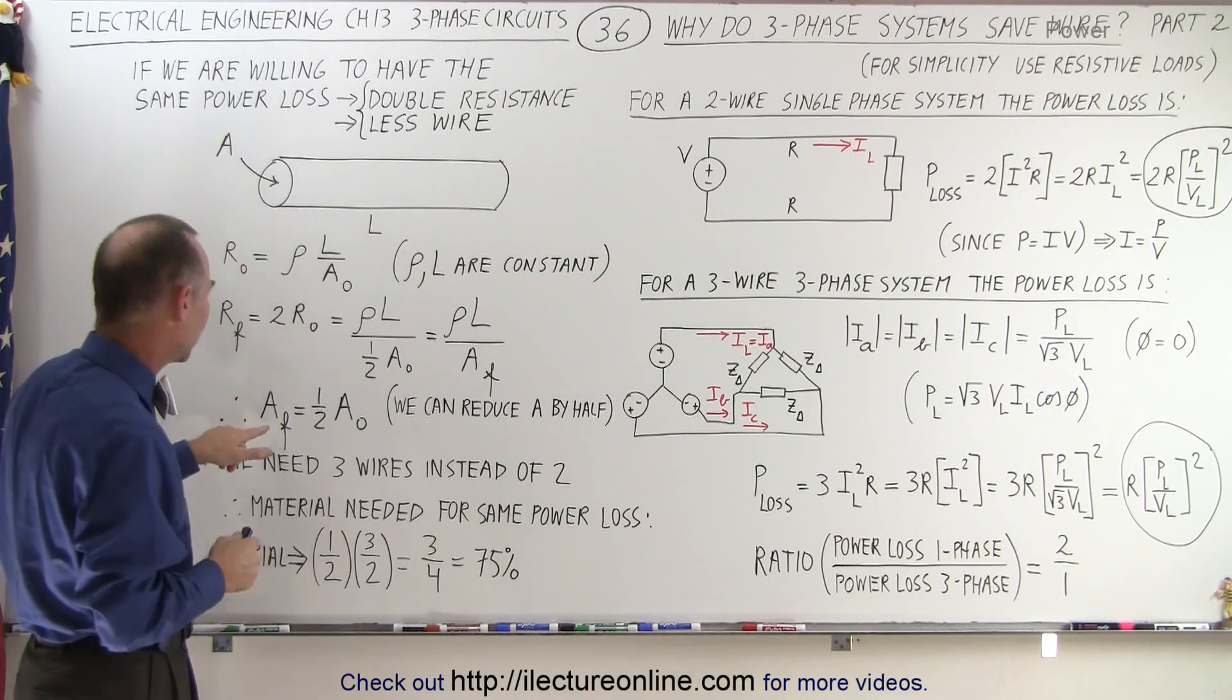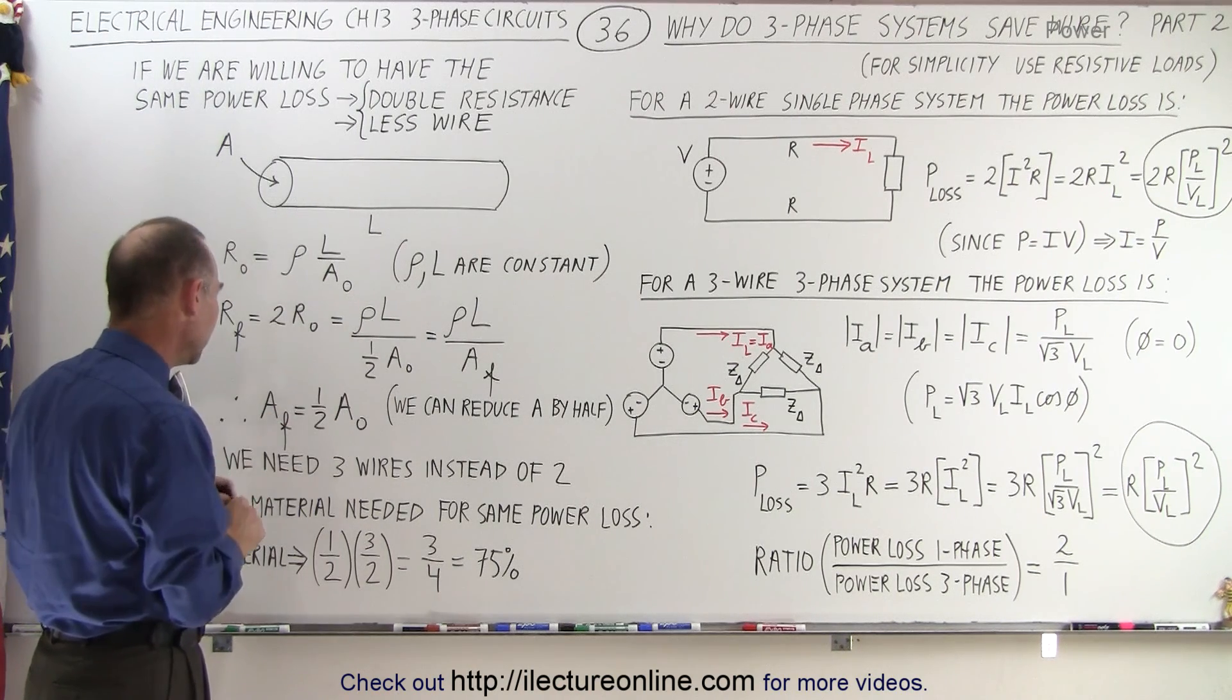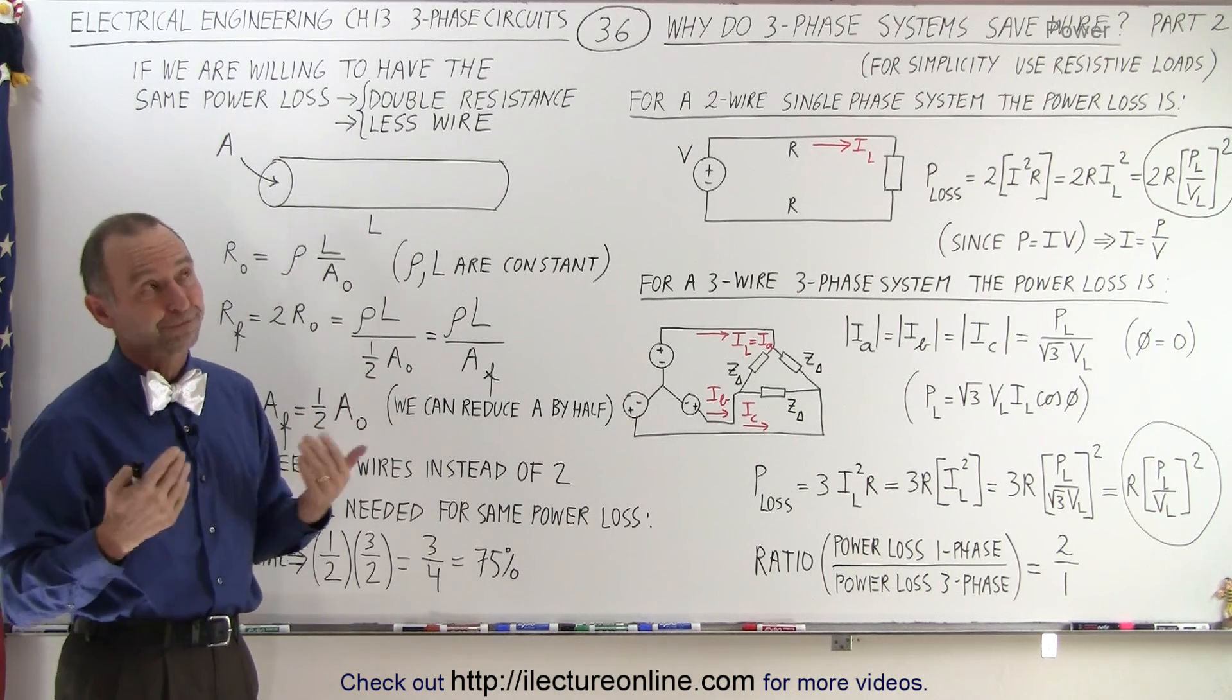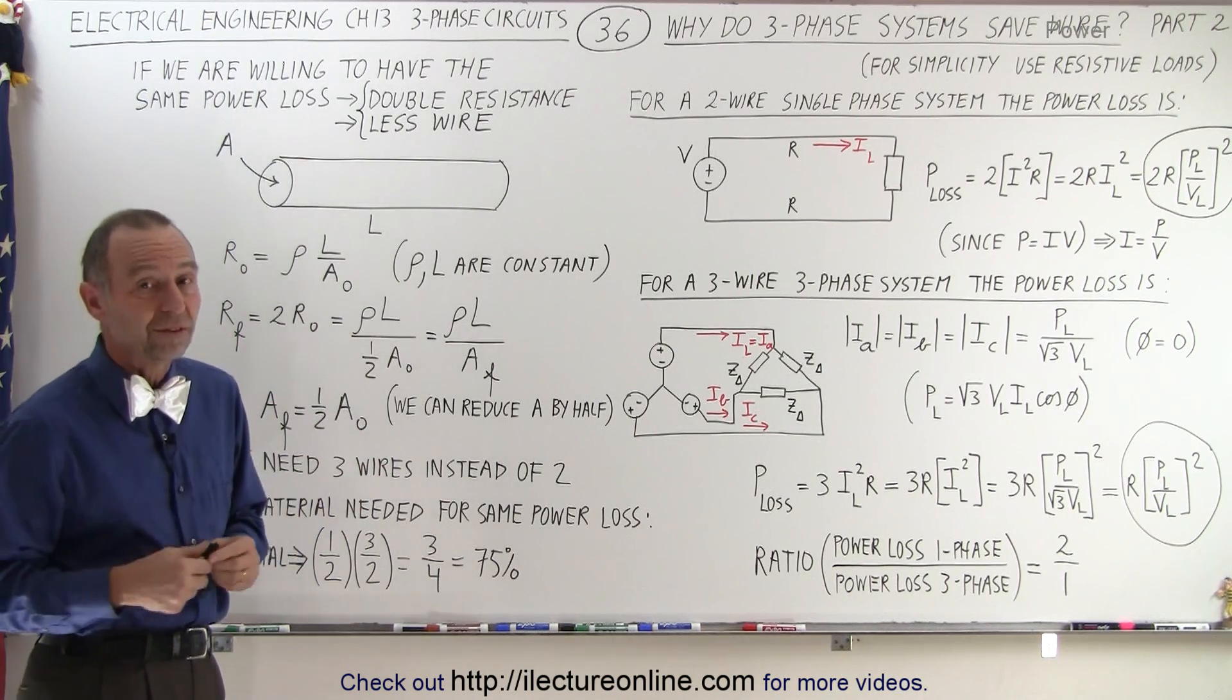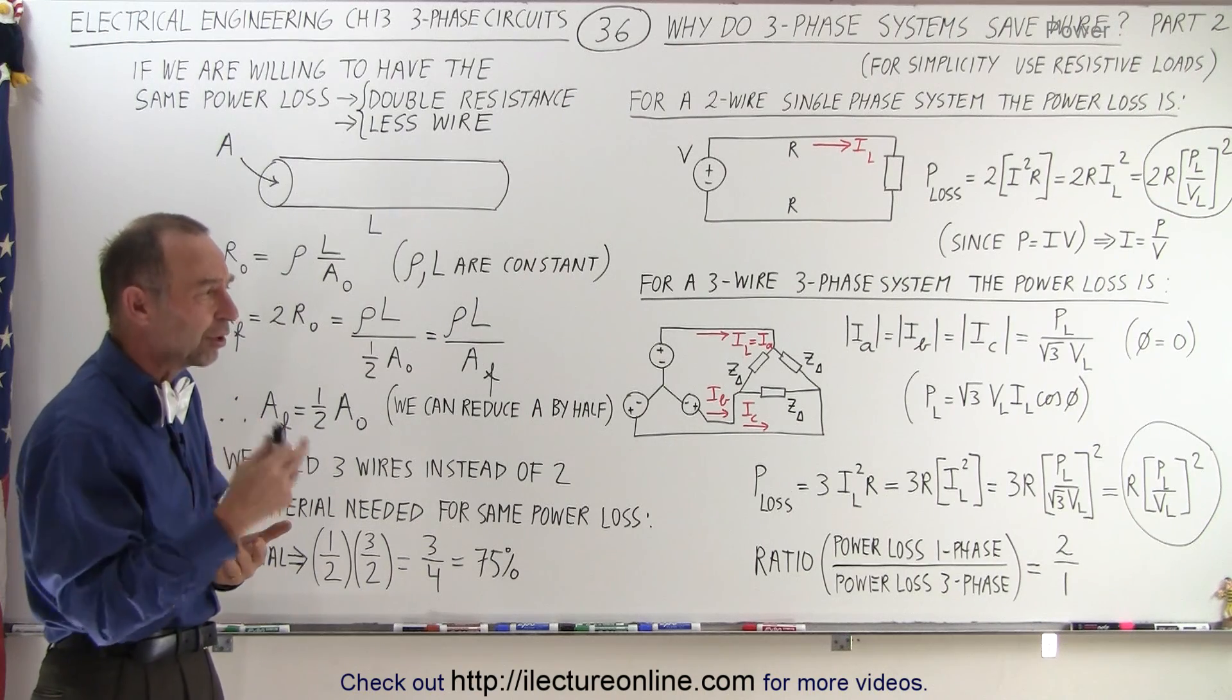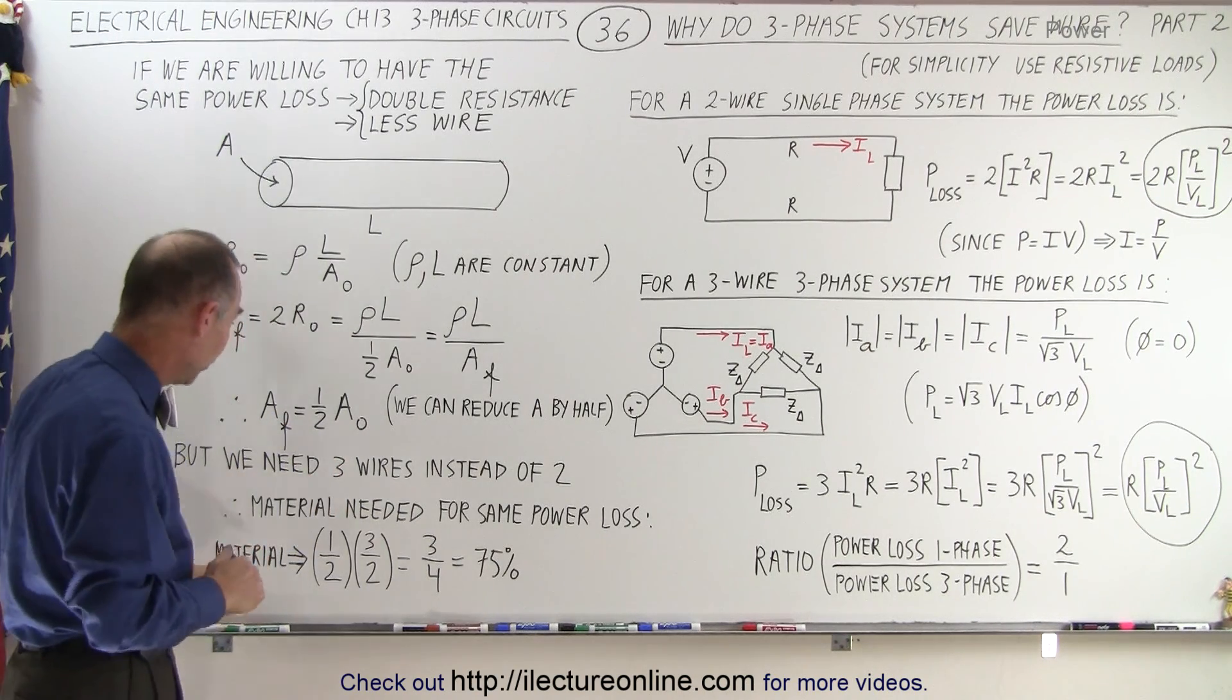If that's the case, then the final area will be half the initial area. But then we realize we also need three wires instead of two wires. If we need three wires, then of course we don't have as much savings. Otherwise, the savings would be two to one. But since we need three wires instead of two wires, the savings aren't quite as big, but still pretty good.